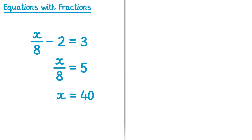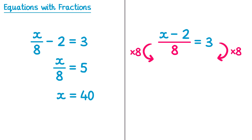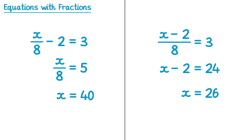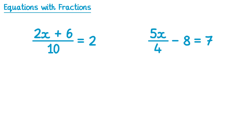Now we'll try another equation that looks very similar — same numbers, but the fraction line covers the x and the subtract 2. So for this one we look at the divide by 8 first, multiplying by 8 on both sides. This cancels the 8 on the left, leaving x subtract 2, and on the right 3 multiplied by 8 is 24. Then we add 2 to both sides — the subtract 2 cancels on the left, leaving x, and 24 plus 2 is 26.